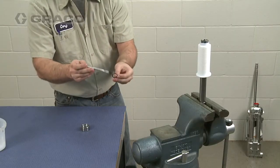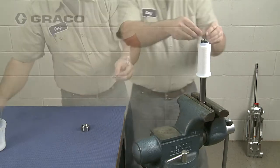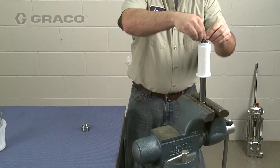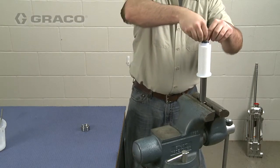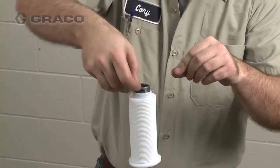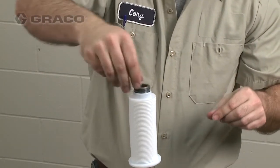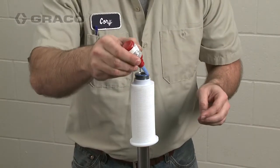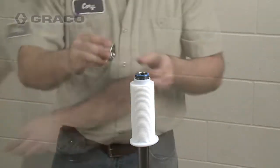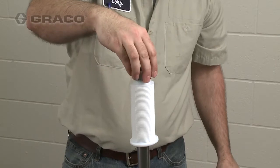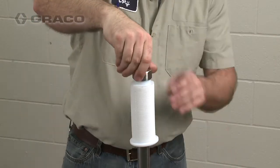Lubricate and install the second o-ring into the bellows sleeve. Then, apply a medium strength thread sealer to the outside threads of the bellows sleeve and install the bellows nut.